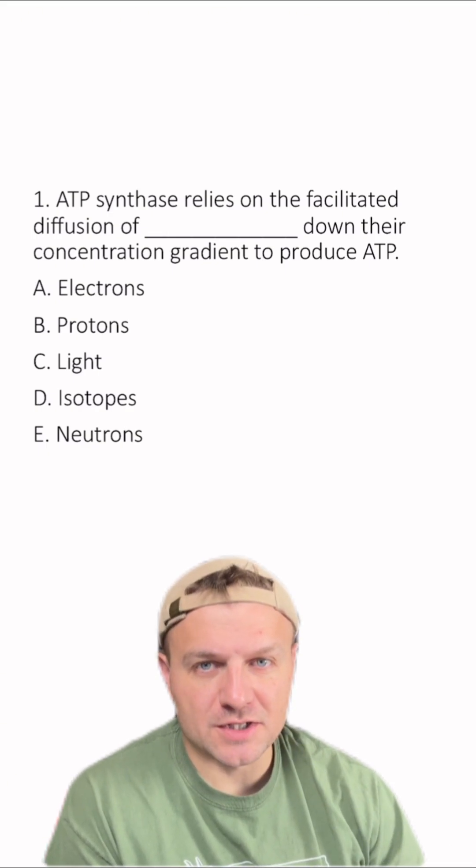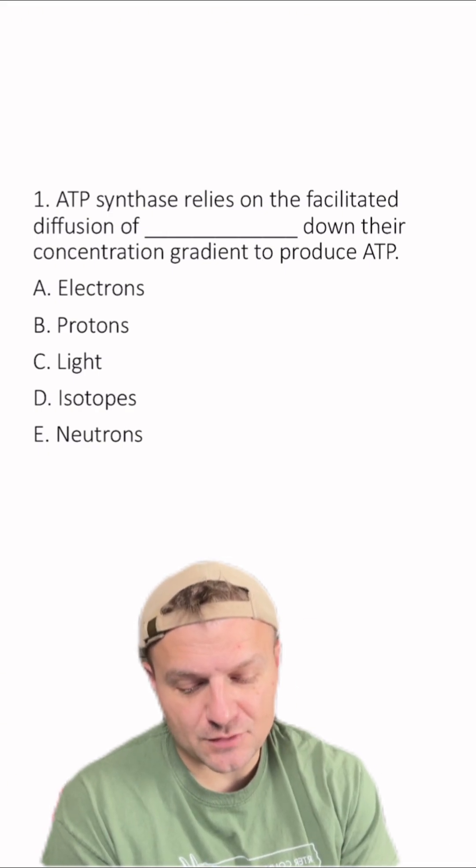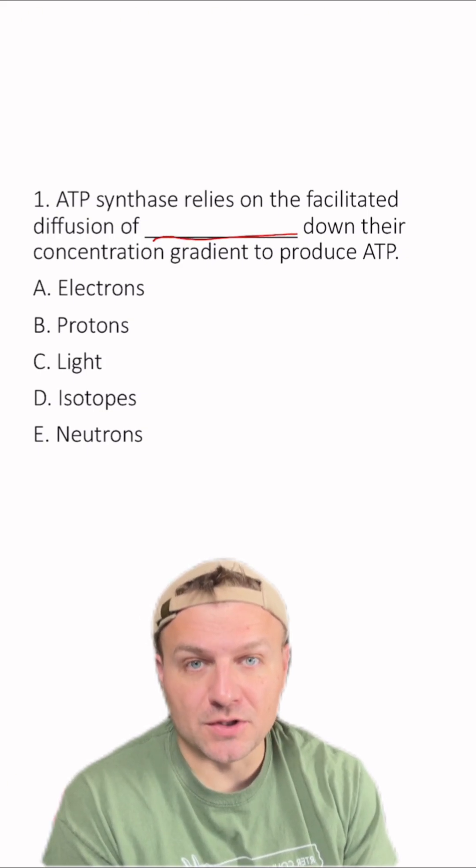Let's go over three multiple choice questions about cellular respiration. Number one, ATP synthase relies on the facilitated diffusion of blank down their concentration gradient to produce ATP.